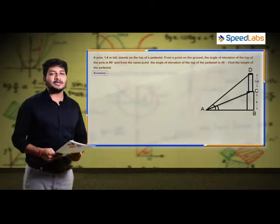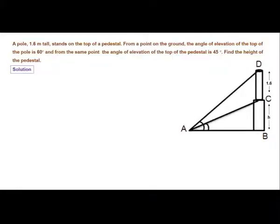The question states that the pedestal makes an angle of 45 degrees with the ground, and the top of the pole makes a 60-degree angle with the ground. Two angles and the pole height are given, and you need to find the height of the pedestal.